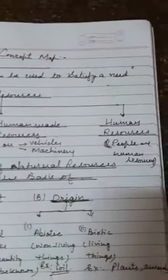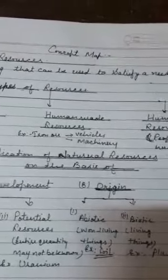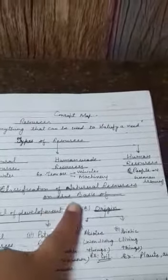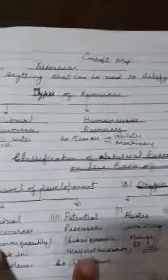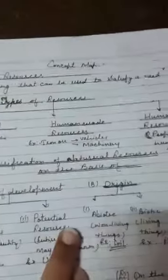Now I am going to describe the second point of this concept — classification of natural resources. Natural resources ka classification. Ye toh tha resources ka classification — three categories: natural, human-made, and human resources. Ab hum baat karenge classification of natural resources. There are four bases of classification. First: level of development. There are two categories here — actual resources and potential resources.